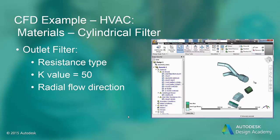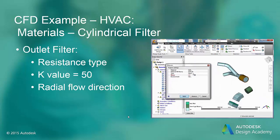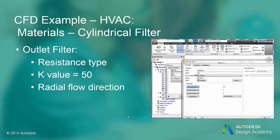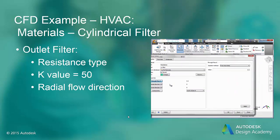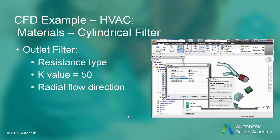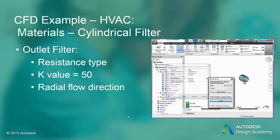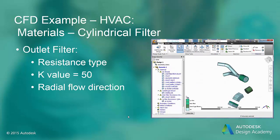Next we assign the outlet cylindrical filter. It may be easier to hide the part around the outlet filter to see it better. The K value for this filter is also 50. In this case, the K values for the other directions are set to zero, which is equivalent to setting them to very high values. Since this is a cylindrical filter, we choose the flow direction and click the radial button on the flow direction window, then select the axis of the filter as the normal direction.